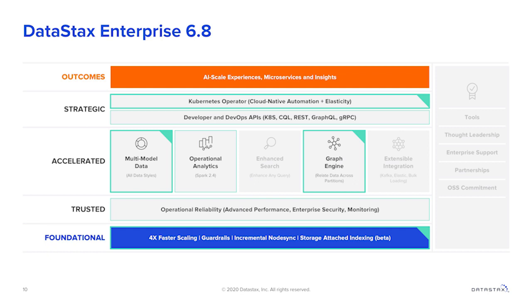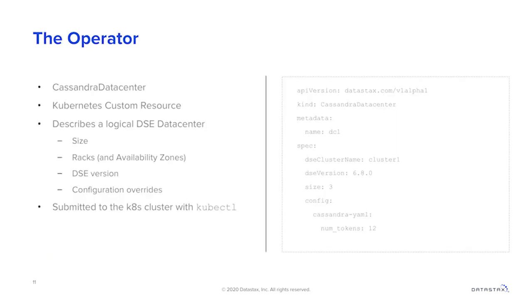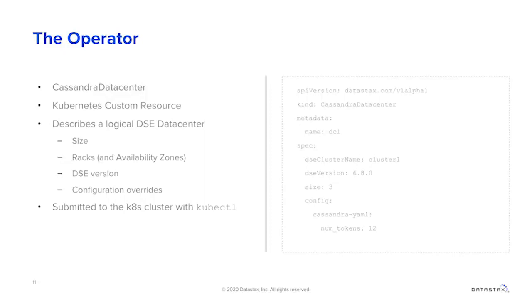With that, I'm going to hand things over to Jonathan, who's going to get into detail on what some of these features are and what they mean to you. So let's start with the Cassandra operator in DSE 6.8. The operator uses a Kubernetes custom resource called the CassandraDataCenter, which is the resource used by Kubernetes to deploy clusters. We're going to walk through some examples to show you how Cassandra and Kubernetes work together through this operator.